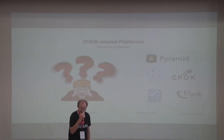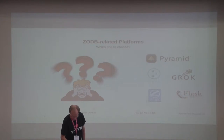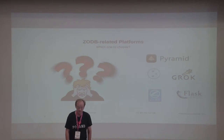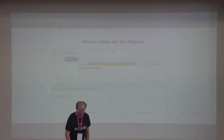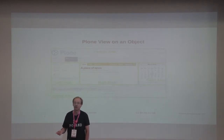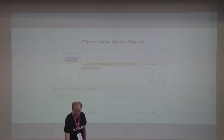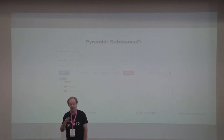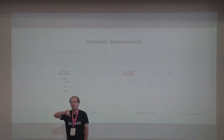Lots of different platforms use ZeoDB: Plone, Grok, there's a Flask interface, and Pyramid also uses it. Here's what the Plone interface looks like. Pyramid has an interface called SubstanceD, which allows you to look at a node, a category, a container or dictionary of objects. You can choose which one to operate on, edit it, change the name, add, delete, rename, cut and paste.